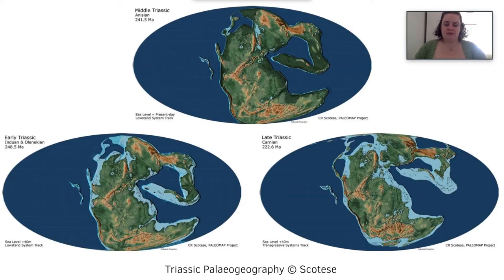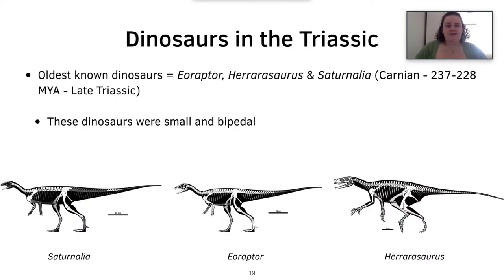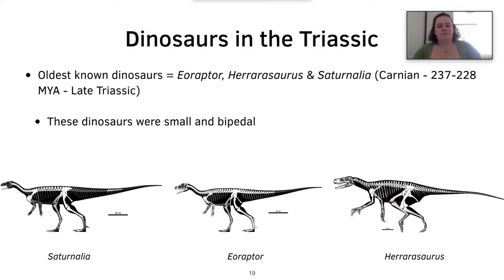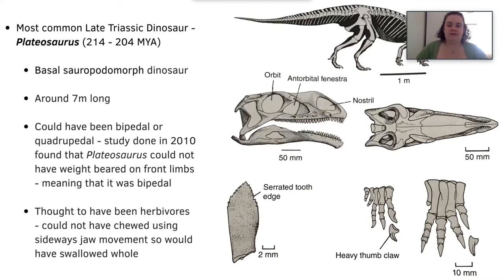Here we have three different paleogeographic maps from Scotese's Paleomap Project showing the early, middle, and late Triassic. As you can see, there was a rise and fall of sea levels and the massive supercontinent Pangaea. The oldest known dinosaurs are Eoraptor, Herrerasaurus, and Saturnalia, which are Carnian age — late Triassic — around 237 to 228 million years ago. These dinosaurs were small and bipedal. The most common late Triassic dinosaur was Plateosaurus, dating to 214 to 204 million years ago. It's a basal sauropodomorph dinosaur, around seven meters long — quite large for the time — and a 2010 study found it could not bear its weight on its front legs, so it had to be bipedal.